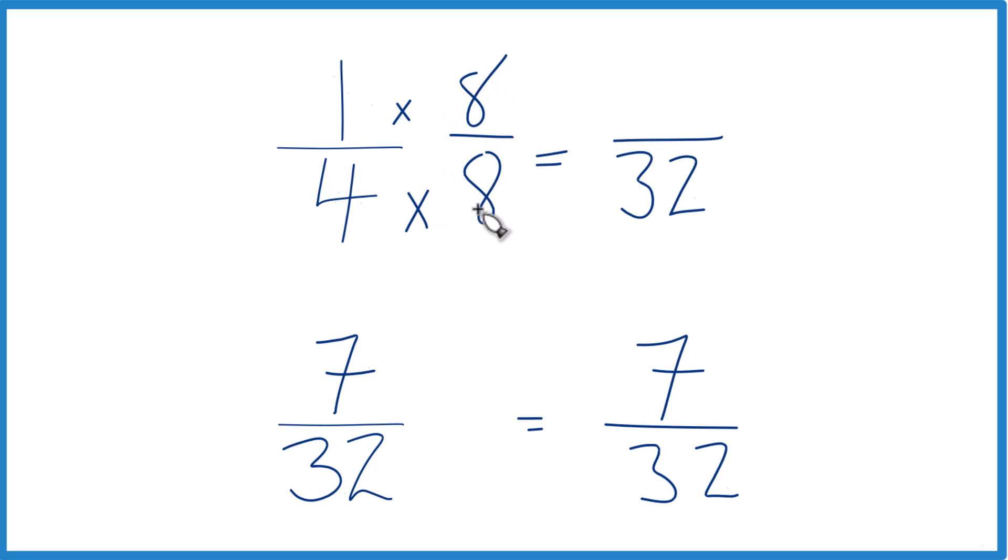That's because eight over eight equals one. I'm just multiplying by one. It doesn't change the value, just the way it's represented. One times eight, that's eight.